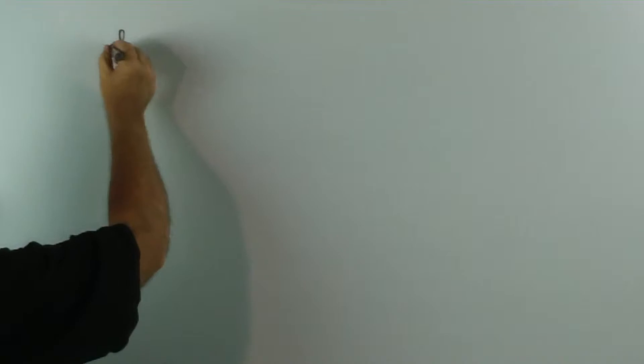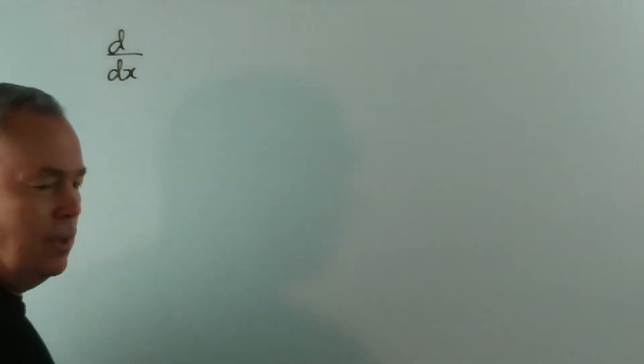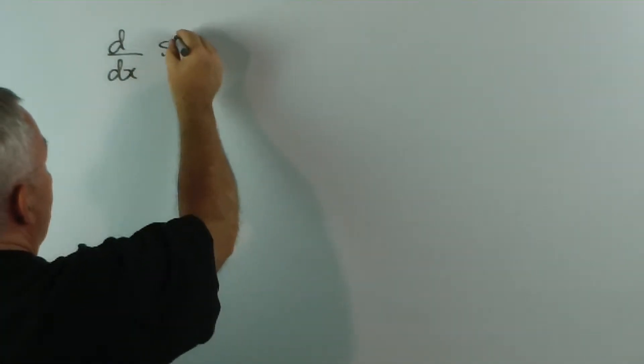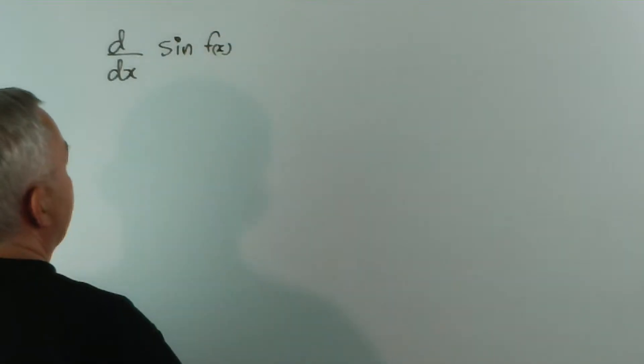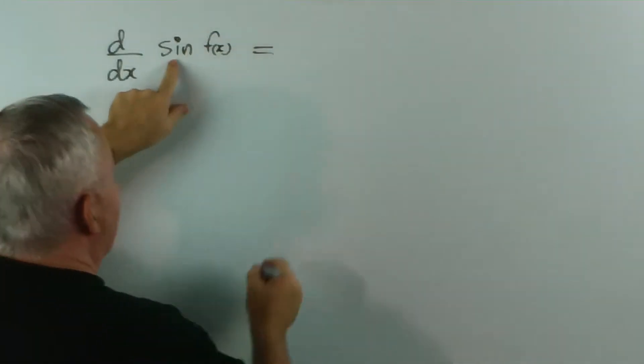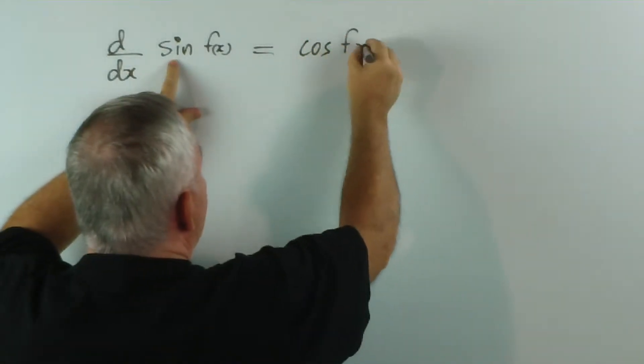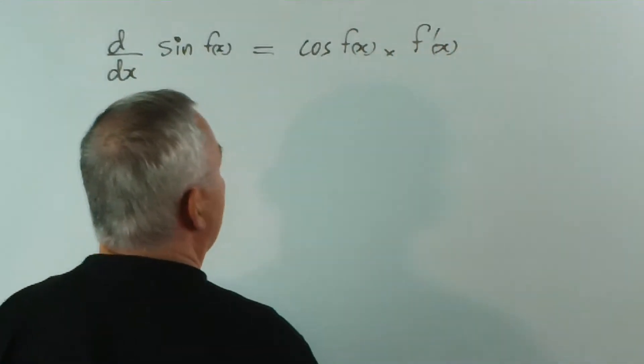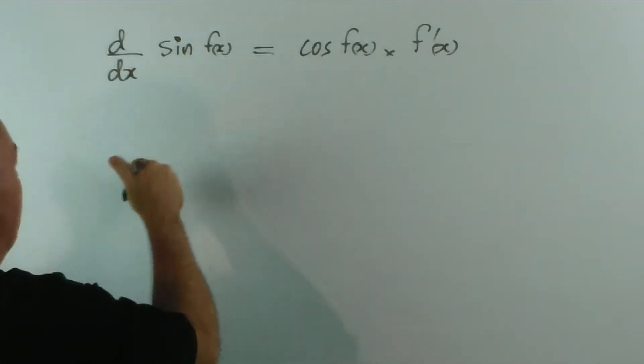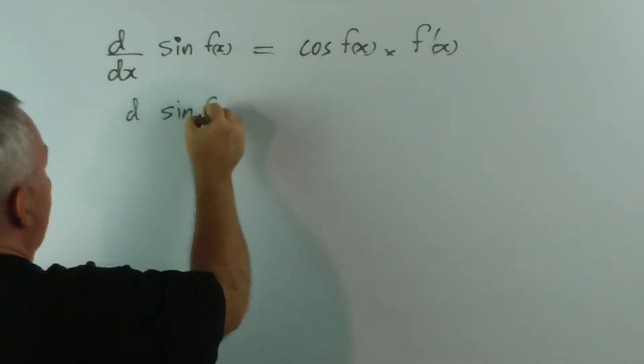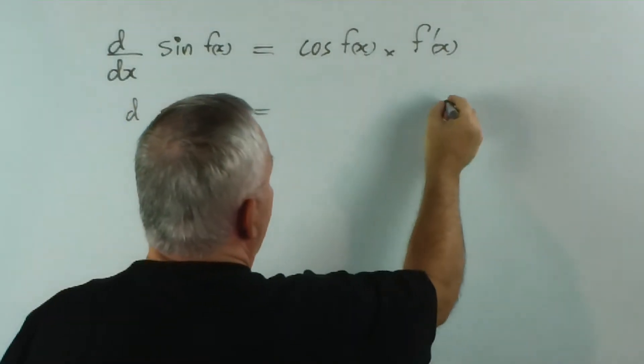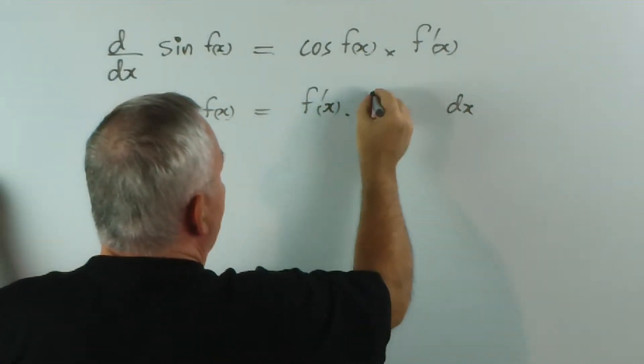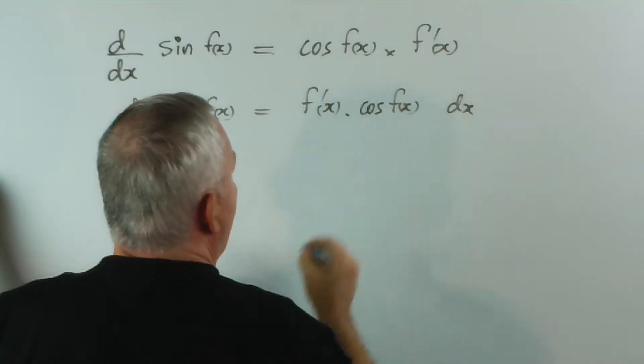So, we'll start again looking at the derivative. It's always good to look at the derivative in order to understand what you're integrating. If we have sine of some function of x, the derivative of sine is cosine of whatever's inside multiplied by the derivative of what's inside. If we multiply both sides by dx, I'll put the dx here. I'm going to reverse these because I do like the function, the derivative at the front, times cos dx.